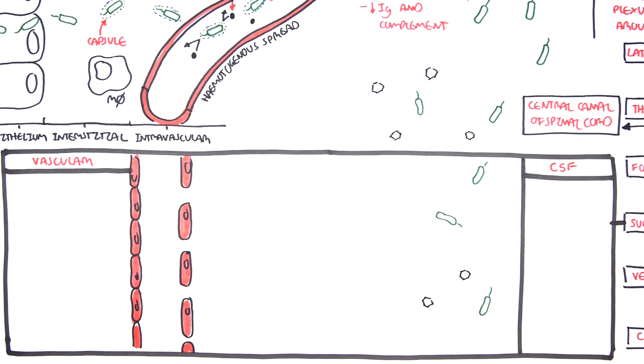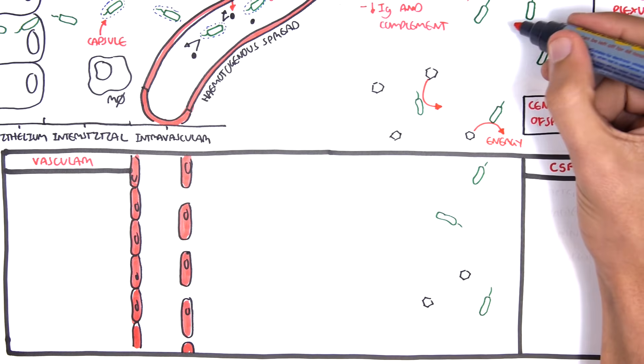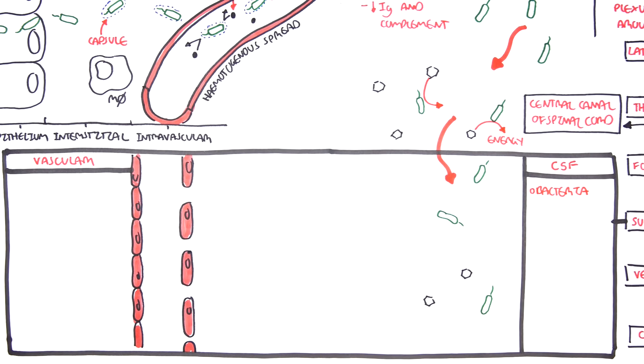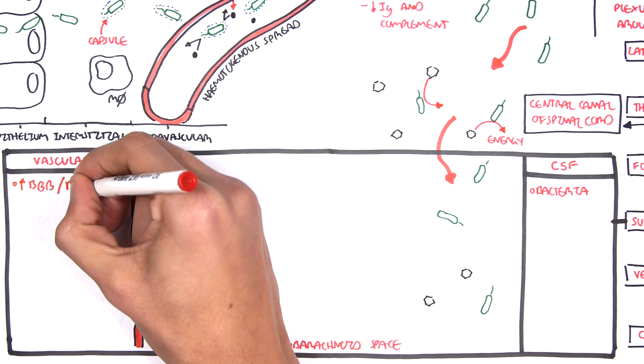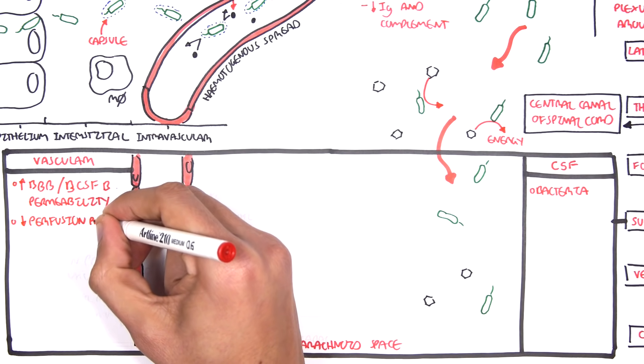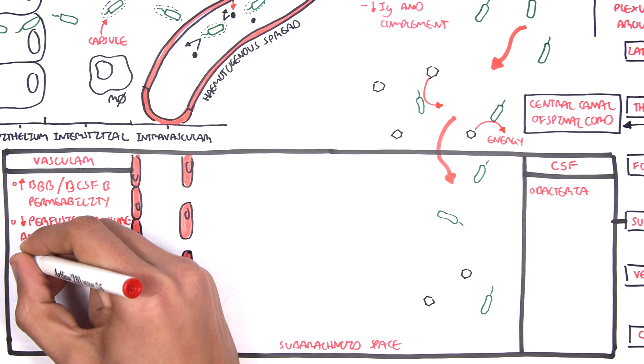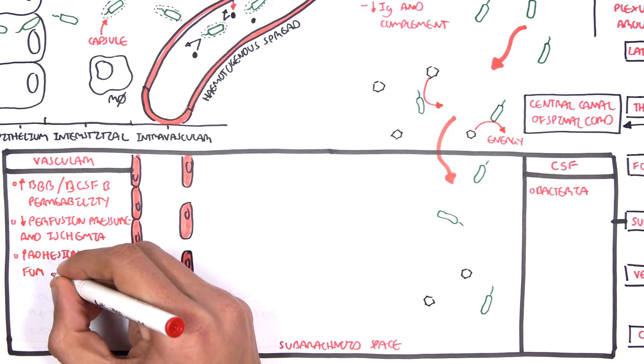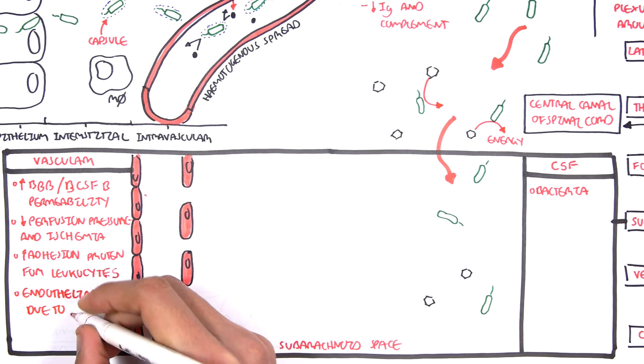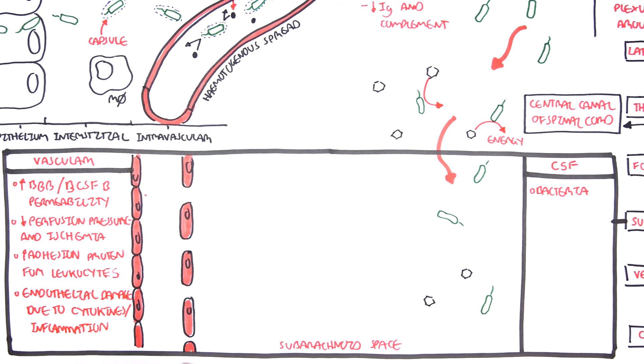Bacteria in the cerebrospinal fluid can use up the glucose in the area and use glucose as a source of energy. So in the cerebrospinal fluid now we have the bacteria. The vasculature will respond to the presence of bacteria and will increase the vessel wall permeability. You have also a decrease in perfusion pressure and possibly subsequent ischemia. There will be increase in adhesion proteins for leukocytes to allow it to invade the area and also you will actually have endothelial damage, vessel damage in response to cytokine mediated inflammation.